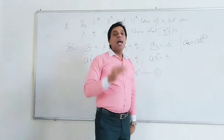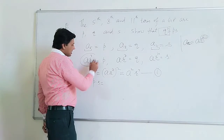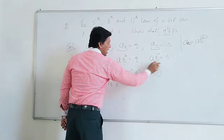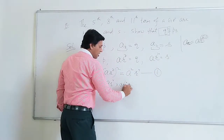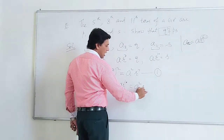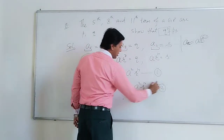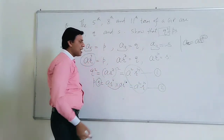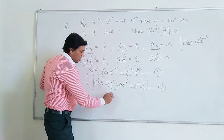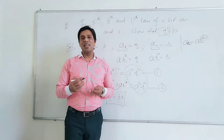Now, to get the right-hand side, I multiply P and S. P into S: the value of P is A·R⁴ and the value of S is A·R¹⁰. After multiplying, A times A gives A², and 4 plus 10 gives R to the power 14 — this is the second situation. Comparing first and second, the right-hand sides are the same, so the left-hand sides must also be equal. Therefore Q squared equals P·S, and we have proved this.